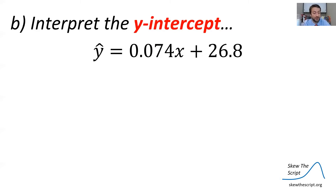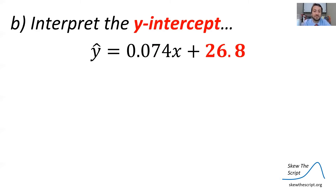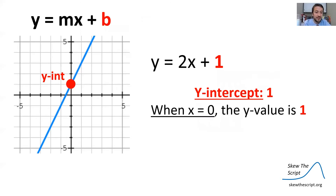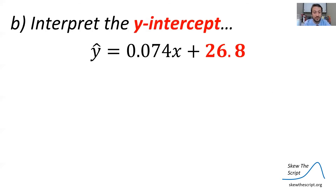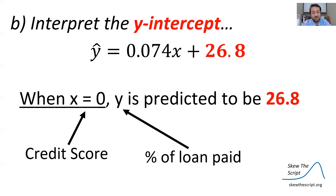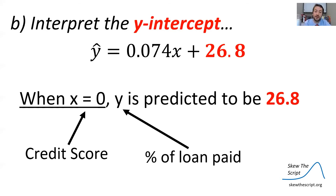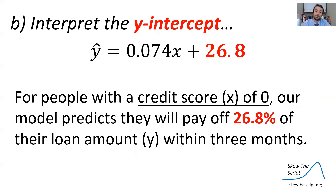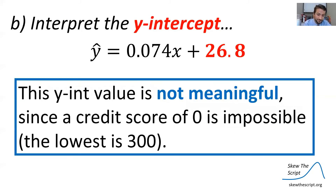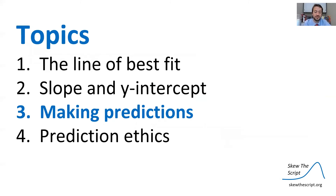Second, we can interpret the y-intercept, which is 26.8 — the b in y equals mx plus b. When x equals 0, y is predicted to be 26.8. Since x is our credit score and y is the percent of loan paid off, the interpretation is: for people with a credit score of 0, our model predicts they will pay off 26.8% of their loan within three months. However, the y-intercept value is not meaningful here since a credit score of 0 is impossible — the lowest is 300. So in this case, the y-intercept specifically doesn't matter as much on its own.